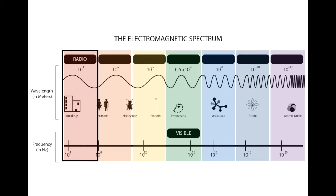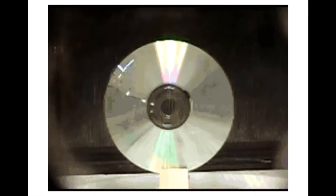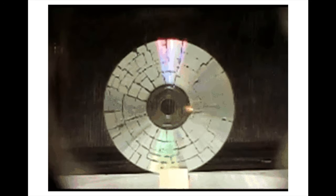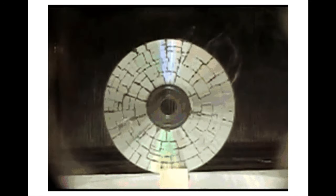A version of radio waves that have shorter wavelengths and more energy are called microwaves. They have shorter wavelengths and higher frequencies, and they contain more energy, which makes them really useful in heating food. Other uses include radar, which we use to detect airplanes and speeding cars, and cell phones — cell phones use microwaves to communicate with the cell phone tower. As you can see, microwaves are penetrating this metal causing reactions in this CD.